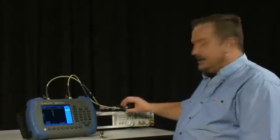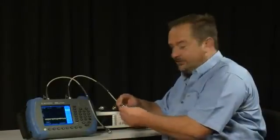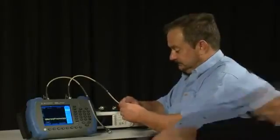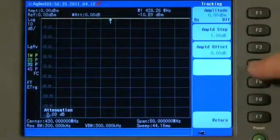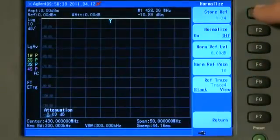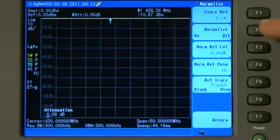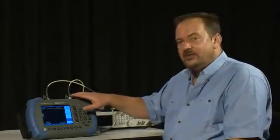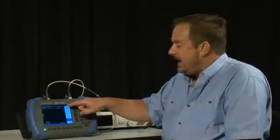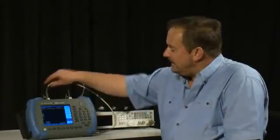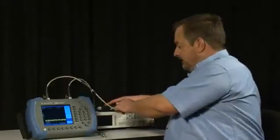So I will disconnect the filter and I will connect the through adapter. And if we press the Mesh key, and then Normalize, Store Ref 1 to 4, that saves the trace into the memory, and then press Normalize on. The instrument has now normalized this trace. The trace is now at exactly 0 dB, right the way across the top of the screen, and is removing any losses or errors from the cables and adapters and the rest of the measurement setup.